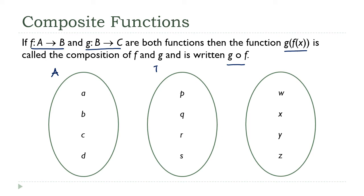So to illustrate this, if we let this set be A, we'll let the middle one be B, and the right-hand one C. Then our function f is going from A to B, and our function g is going from B to C.